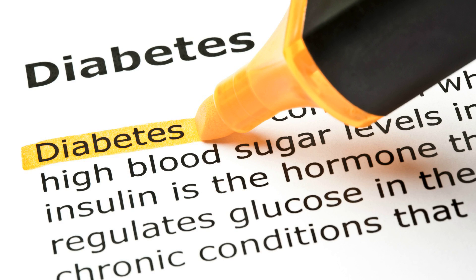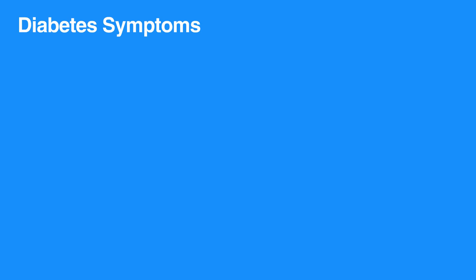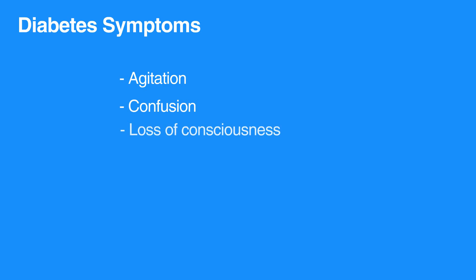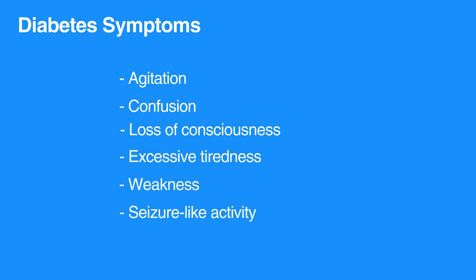Diabetes affects an individual's ability to regulate blood sugar. Fluctuations in blood sugar in either direction can produce symptoms such as agitation, confusion, loss of consciousness, excessive tiredness, weakness, and even seizure-like activity.